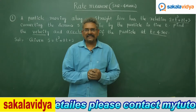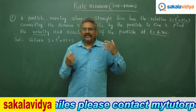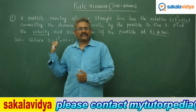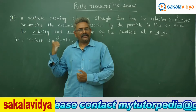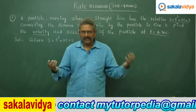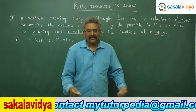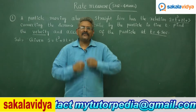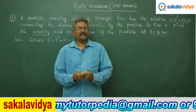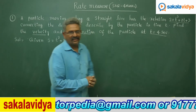Given s is equal to t cubed plus 2t plus 3. Here, s stands for distance or displacement. Velocity is the rate of change of displacement, and acceleration is the rate of change of velocity. So if you differentiate s with respect to time t, you get ds by dt, which is nothing but velocity. Again differentiating with respect to t gives acceleration.